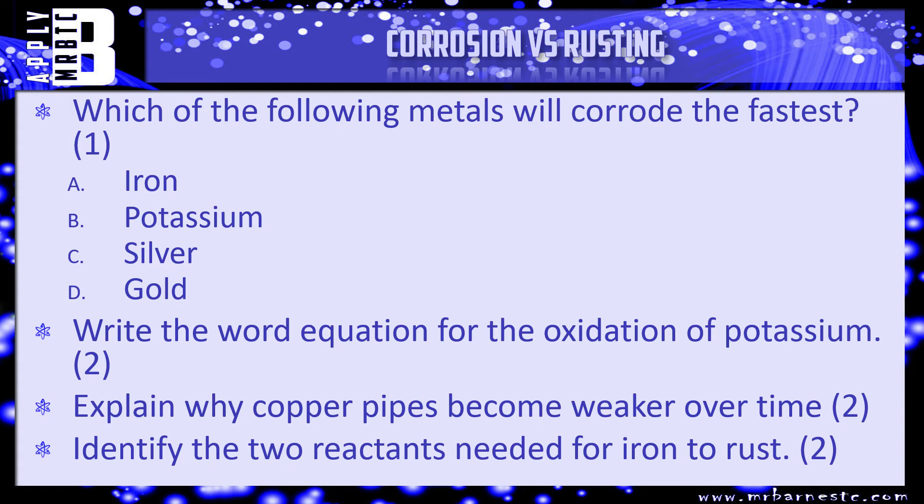Second question, write the word equation for the oxidation of potassium. That's worth two marks. Third question, explain why copper pipes become weaker over time. And then finally, identify the two reactants needed for iron to rust. Have a think, pause the video, have a go at the questions, and we'll see how you've done in a minute.